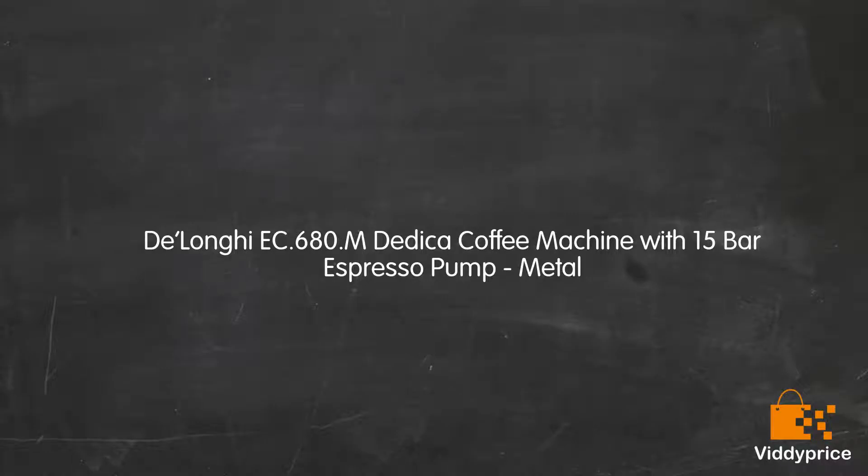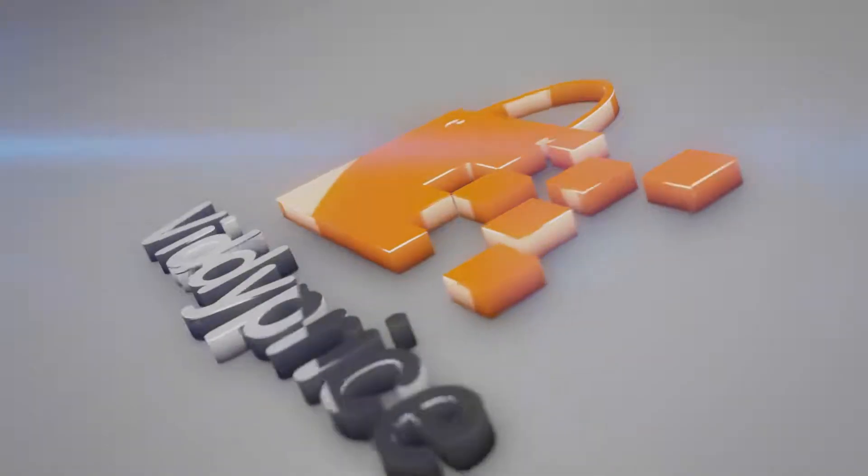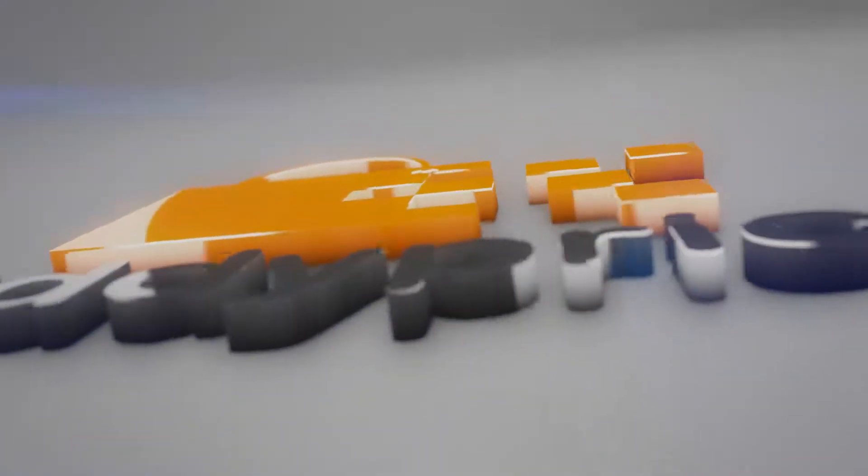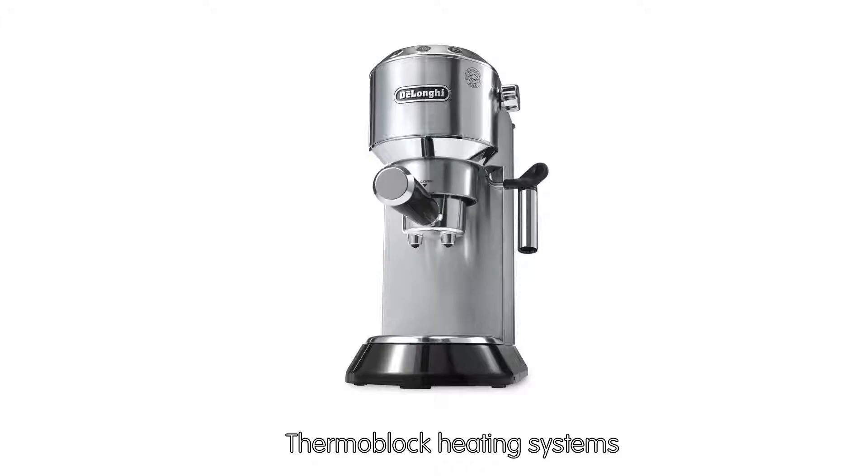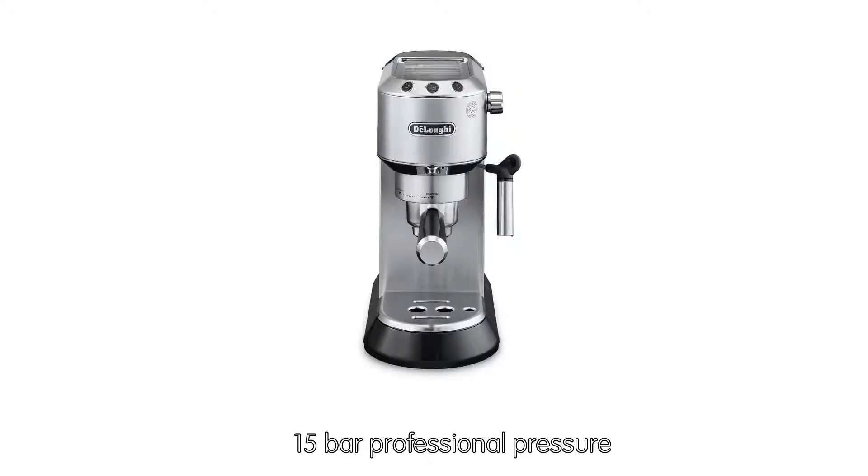Let's talk about the DeLonghi EC.680.M Dedica Coffee Machine with 15 Bar Espresso Pump Metal. It features a Thermoblock Heating System, 15 bar professional pressure, and is ready to use in 35 seconds. It includes a manual milk frother and anti-drip system.